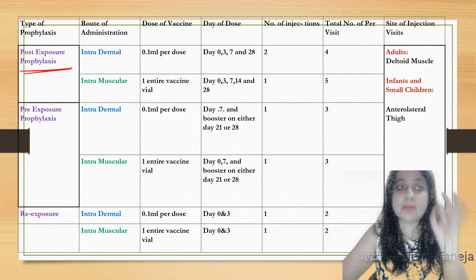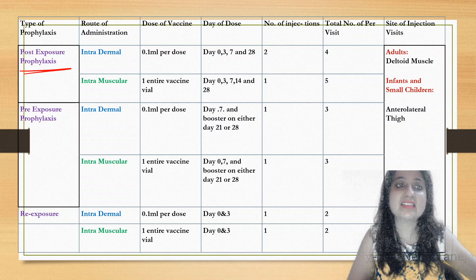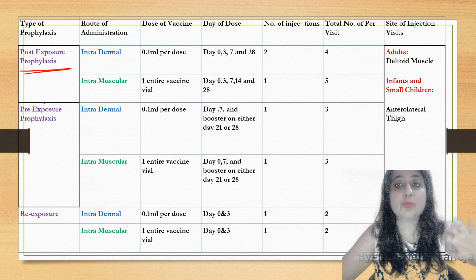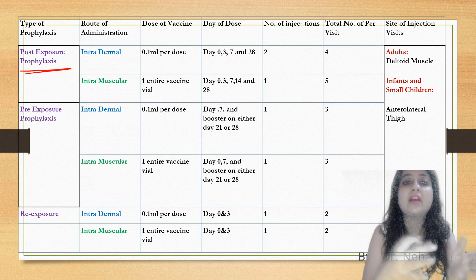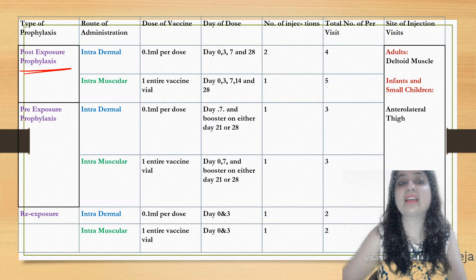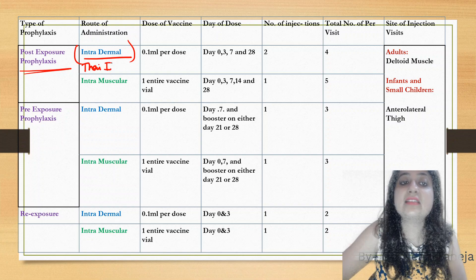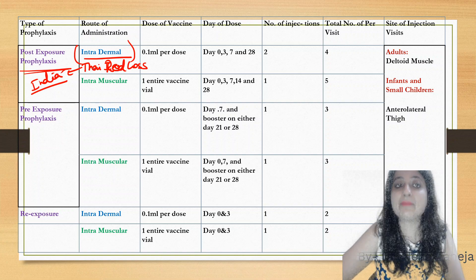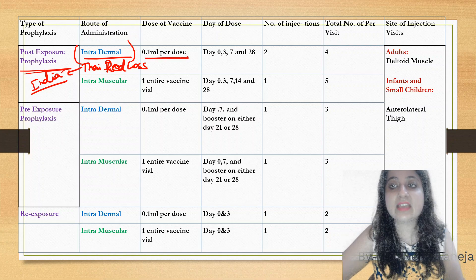Regarding post-exposure prophylaxis (PEP): our National Rabies Control Program states that even if someone has been bitten by a vaccinated dog, we still proceed with PEP. It is given in every case of street dog bite and even if the dog is observed for 10 days — vaccination is not stopped. In India, the intradermal regimen is followed, with 0.1 ml per dose.